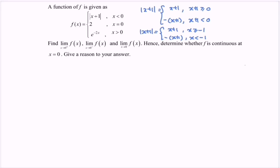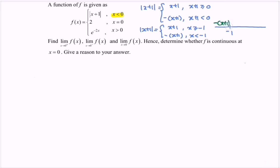By illustrating the situation on a real number line, we have a straight line with negative 1 marked. For the left-hand side we have negative (x plus 1), and for the right-hand side we have x plus 1. Based on the question, when x is less than 0 the function is x plus 1; when x is equal to 0 the value of y is 2; and when x is greater than 0 the function is e to the power of negative 2x.